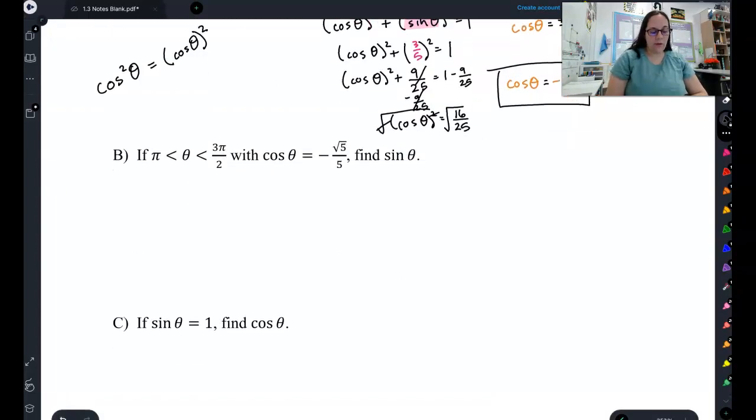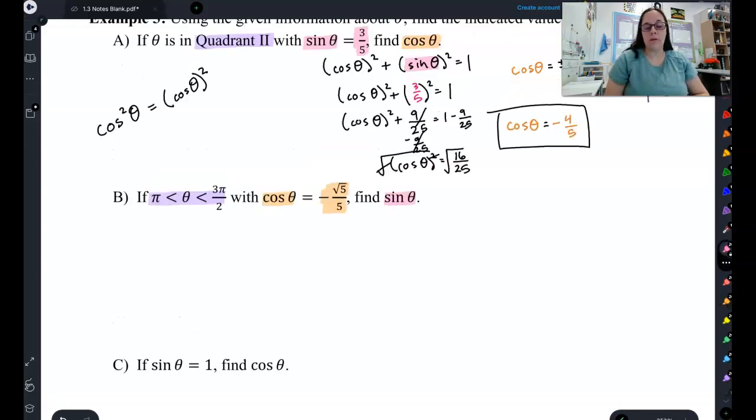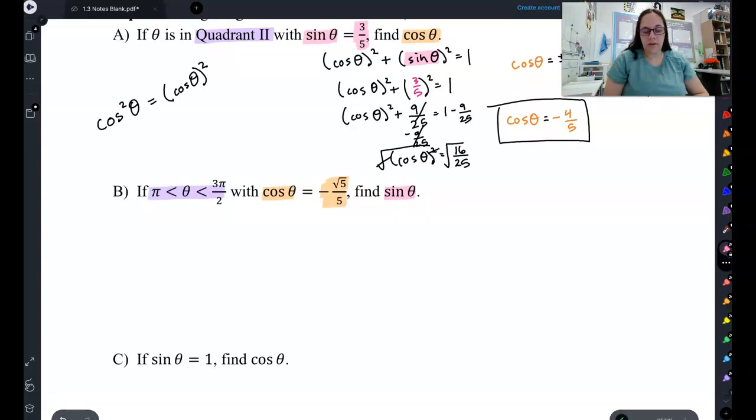Now, what I would like you to do is pause the video and try B. So, this time, you know your angle is between pi and 3 pi halves. You know that the cosine is this fraction here. And this time, you are solving for the sine. So, put it into the Pythagorean identity, solve for the plus or minus, and then figure out which plus or minus to use based on what quadrant it's in. Pause the video now and try that out on your own.